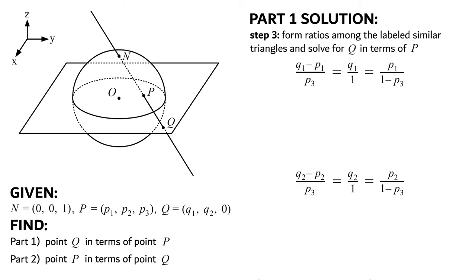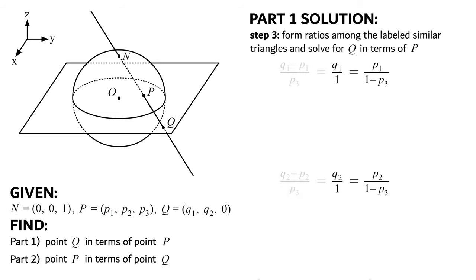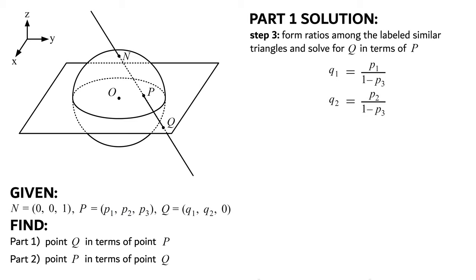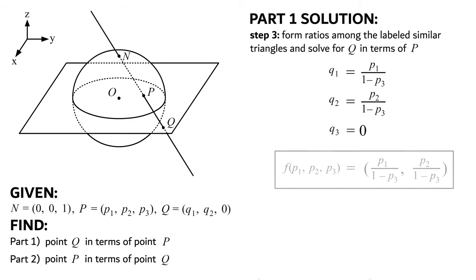Looking at these ratios more closely, dividing by 1 does nothing, and we're left with q1 equals p1 over (1 minus p3), and q2 equals p2 over (1 minus p3). We also know that q3 is 0, which was a given. Since we now have all of q in terms of p, we can write out our function f of p equals q. This brings us to the end of part 1.